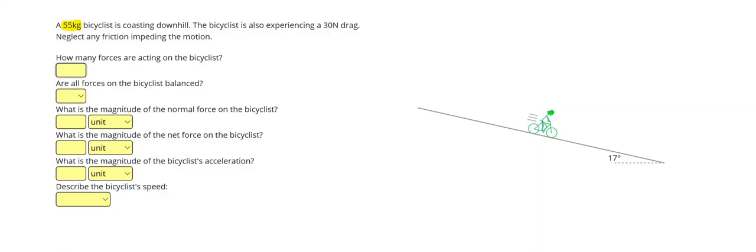A 55 kg bicyclist is coasting downhill. The bicyclist is also experiencing a 30 N drag, neglect any friction impeding the motion.